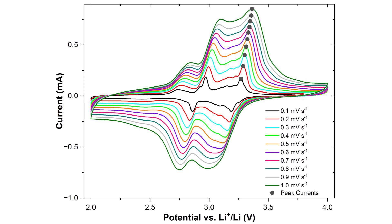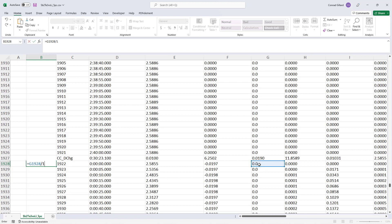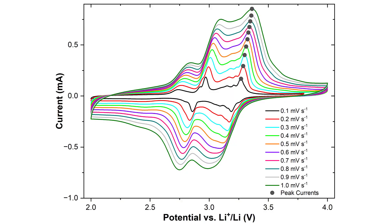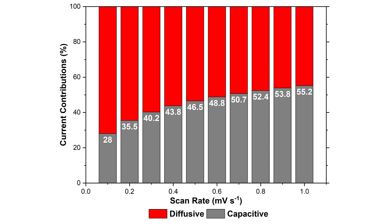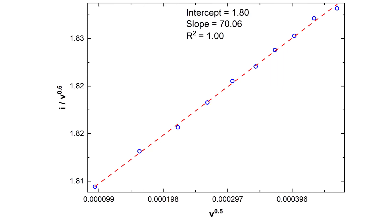Plots of cyclic voltammetry curves and capacitive and diffusive current contributions are common in battery research papers. However, developing these plots manually is a time-consuming and error-prone task. Consequently, I developed a program to automate this process and generate higher-quality outputs. This video will first show a demonstration of this program, followed by a tutorial on its usage.